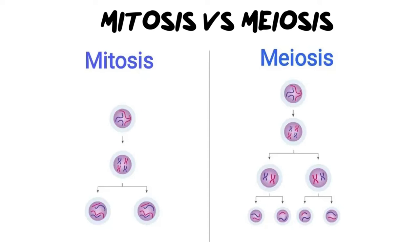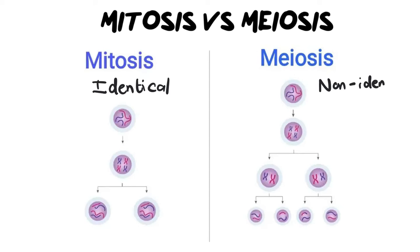Let's dive into the general differences between these two cellular division processes. They are both cellular division but the products they make at the end are very different and the reasons why they occur are different. They do have in common that meiosis and mitosis play a really important role in reproduction. The main difference is that in mitosis we want to create identical cells, whereas meiosis will produce non-identical cells. This comes down to their overall function and purpose.